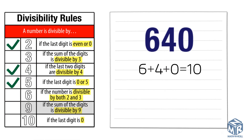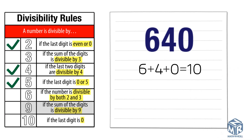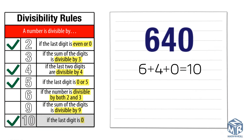Let's check if it's divisible by 9: the sum of the digits is 10, and 10 is not divisible by 9 without a remainder, so 640 is not divisible by 9. 640 is divisible by 10 because the last digit is 0. Using the divisibility rules, we see that 640 is divisible by 2, 4, 5, and 10 without a remainder.